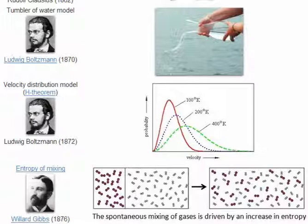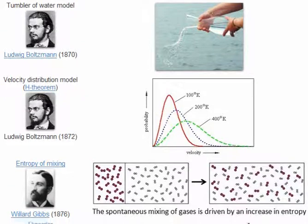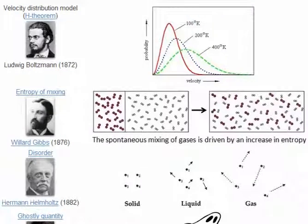In 1876, American engineer Willard Gibbs developed his entropy of mixing model, whereby the spontaneous mixing of gases is driven by an increase in entropy. In 1882, German physician and physicist Hermann Helmholtz argued that the magnitude of entropy must be proportional to the disorder of a body.